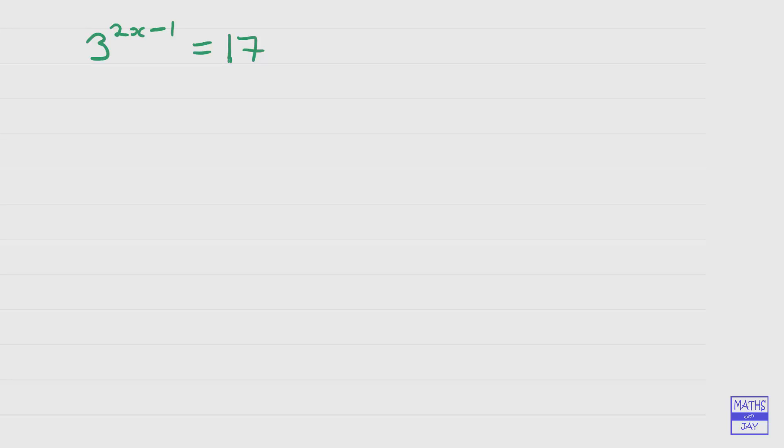The equation is telling us that 3 to the power of something is 17. So let's just look at our powers of 3, ones that we know about. We know that 3 to the power of 1 is 3, 3 squared is 9, and 3 cubed is 27.